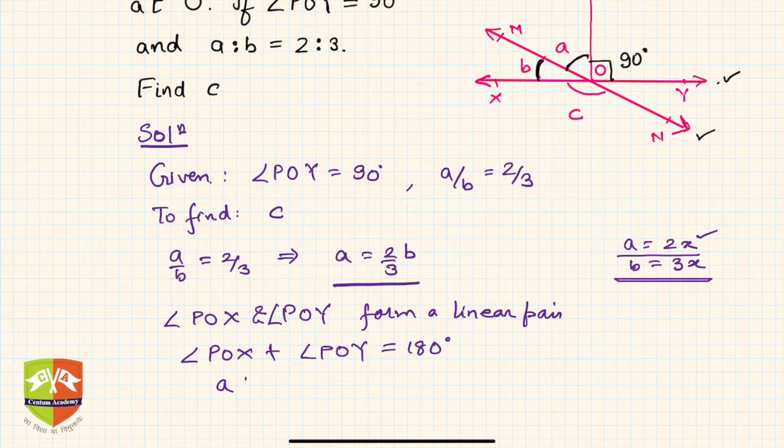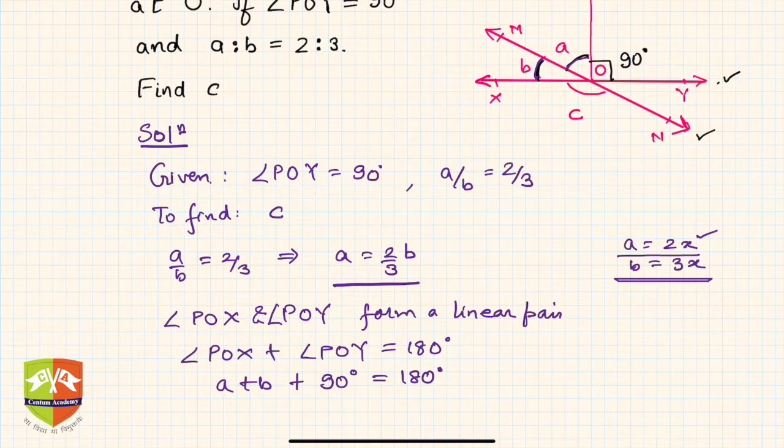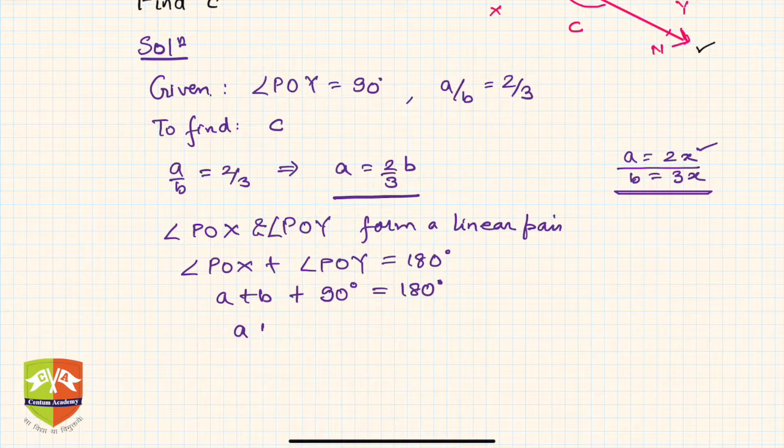POX can be clearly written as a plus b, if you see. A plus b gives you POX, and POY was 90 degrees, so this is equal to 180 degrees. So now a plus b is 180 degrees minus 90 degrees, which equals 90 degrees.